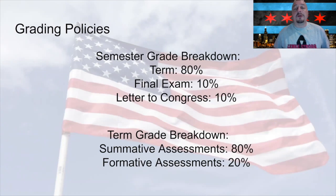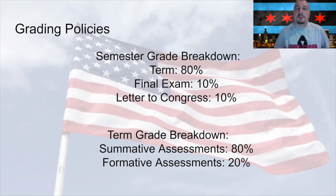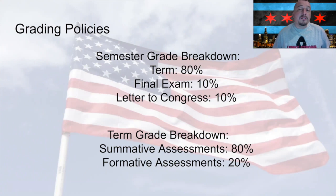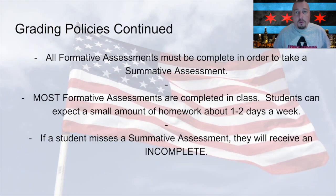Your son or daughter's grade will be broken down in the following manner. The semester grade will be broken down by the term grade being worth 80 percent — that's the work done throughout the semester — and then the final exam and civic education piece make up the additional 20 percent. Your term grade is then broken down with summative assessments being worth 80 percent of their overall grade and the formative assessments, the homework kind of things, being 20 percent.